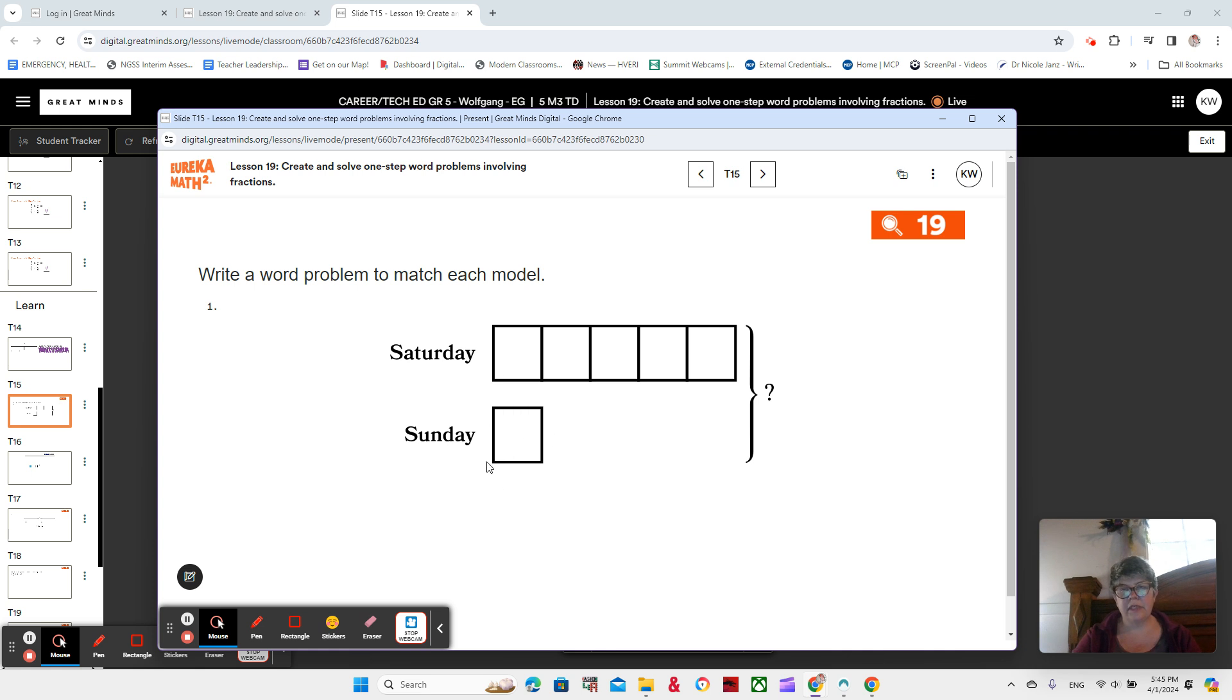Sunday is one-fifth. And we know that because Saturday has five parts. We could say that Sunday is one-fifth of whatever's happening on Saturday. Or we could say that Saturday is five times as much as whatever's happening on Sunday.